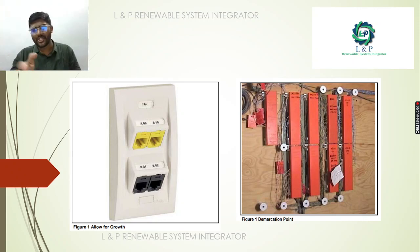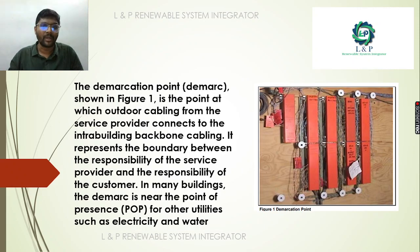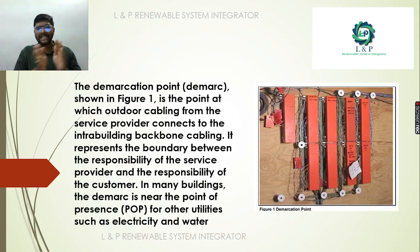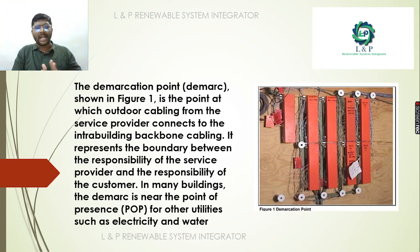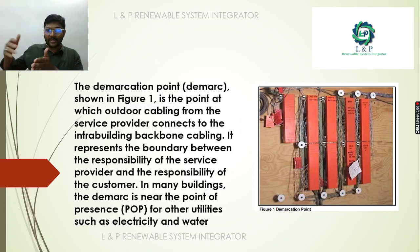There is a demarcation point before the starting stage. The demarcation point is about the service provider. All the building is connected to the backbone cabling. The provision is made in the outdoor cabling — that is the outdoor service provider. It is easy to connect, especially the inter-building backbone cabling.